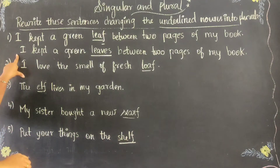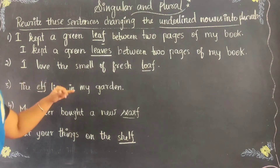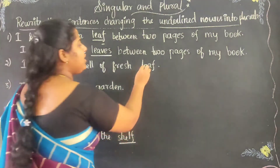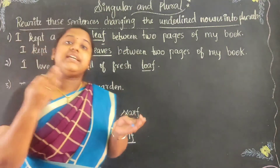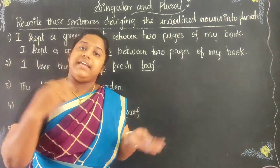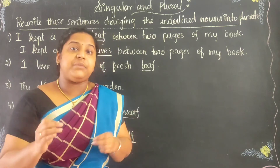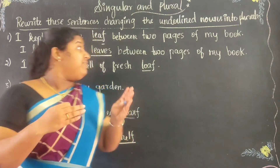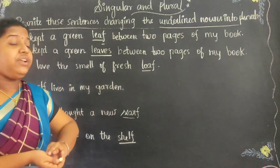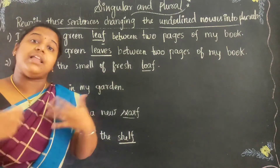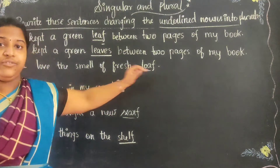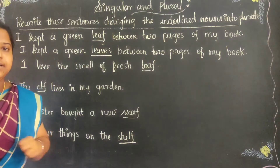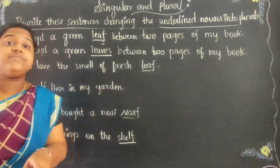Second sentence: I love the smell of fresh loaf. What is loaf? Loaf refers to a whole uncut bread. For mass food quantities, we can say loaf. I love the smell of fresh loaf. Loaf here is the underlined word and the word ends with F.